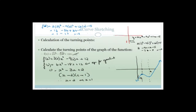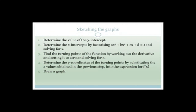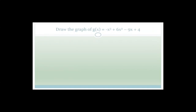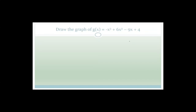Now we know how to use the factor theorem to find where a graph cuts the x-axis, and differentiation to find where it turns. To sketch graphs: first find the y-intercept (the constant), then determine x-cuts by factorizing using the factor theorem, then find turning points by differentiating, then substitute back into the original to get y-coordinates of turning points, then draw.